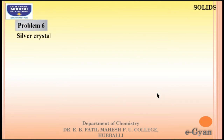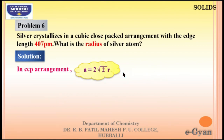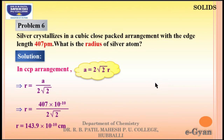Sixth numerical: silver crystallizes in a cubic close-packed (CCP) arrangement with edge length 407 pm. What is the radius of the silver atom? In CCP, A = 2√2 R, so rearranging: R = A / (2√2) = 407 × 10⁻¹⁰ / (2√2). On solving, we get R = 143.9 pm.